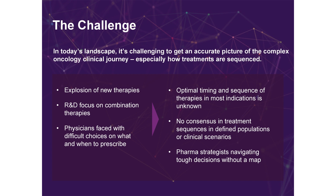Why is this a challenge? Because there's been an explosion of new therapies in recent years. Oncology R&D today is being built on combination therapies and this is just making oncology landscapes even more complex. Some of the key themes are around how to optimally sequence therapies in given indications, and actually there often is no universal treatment sequence and it's often controversial. What is happening today is that pharma strategists are having to navigate very tough decisions without a map.